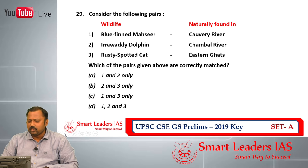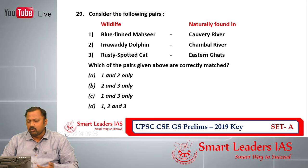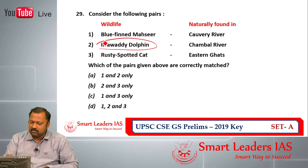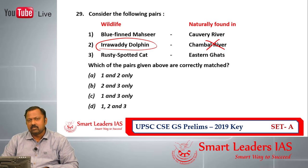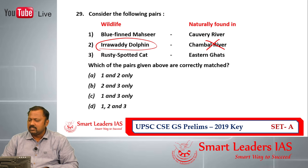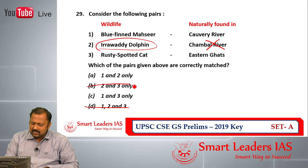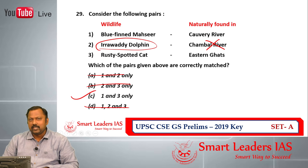Question number 29: consider the following pairs — wildlife naturally found in given locations. I am taking the Irrawaddy dolphin as a key example. The Irrawaddy dolphin is definitely not found in the Chambal River — it is found in the Mekong River and also in Chilka Lake and nearby areas in the Bay of Bengal. So wherever option 2 is included in the answers, I am eliminating it. The answer for question number 29 is C.